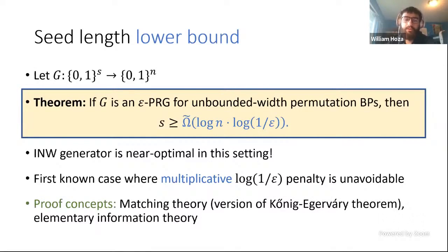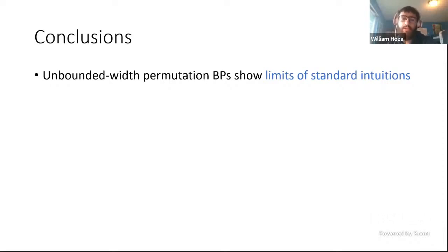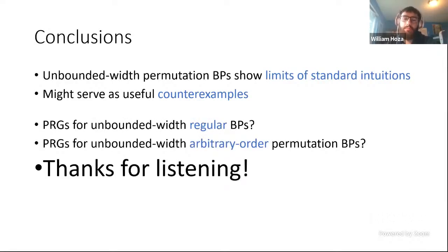Some tools we use to prove this are tools from matching theory and information theory. To conclude: we studied this unconventional model of permutation branching programs with no bound on width. This model pushes back against standard intuitions about pseudorandomness and de-randomization. For that reason, it might be useful to keep this model and these results in mind as potential counter-examples to conjectures you might start formulating about pseudorandom generators. There are several open questions in the paper about extending this work to more general cases.